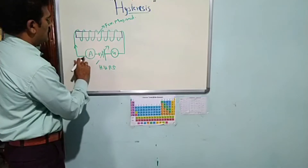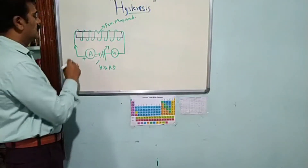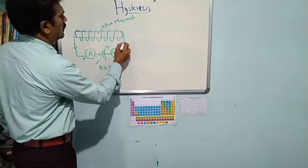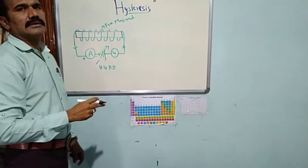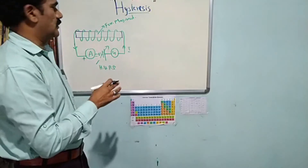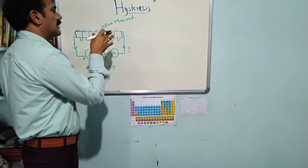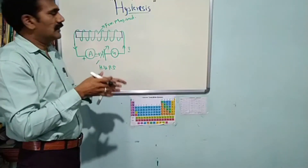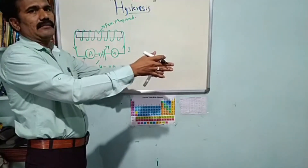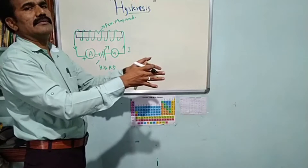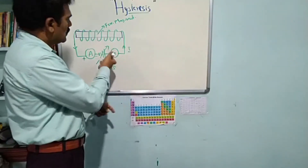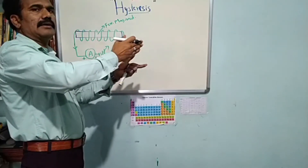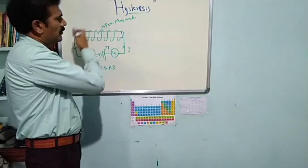After reversing the polarities, including the ammeter terminals, the direction of current reverses and flows through the coil in the opposite direction. When the current reverses, the applied magnetic field intensity on the material also reverses. The dipoles, which were all aligned in the direction of the applied field when saturated, gradually rotate and try to align in the opposite direction.